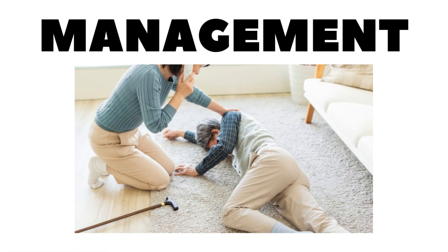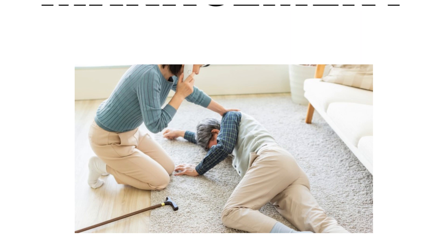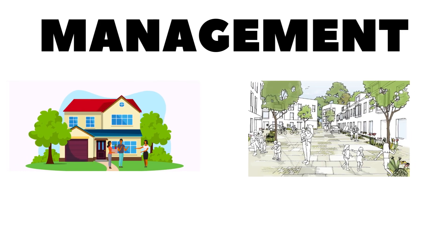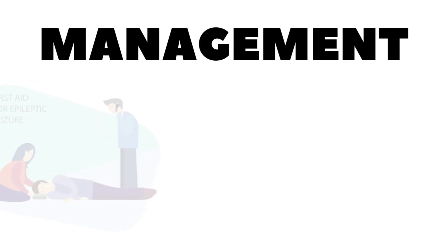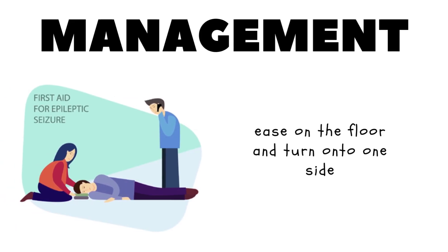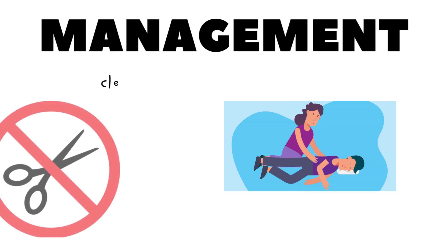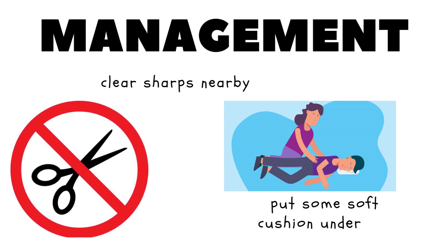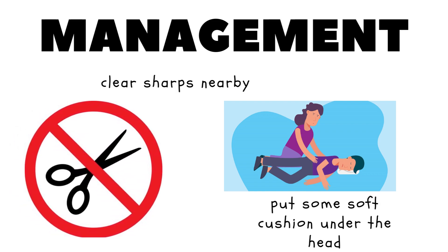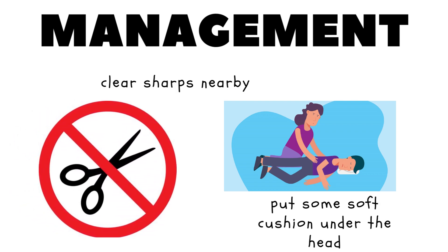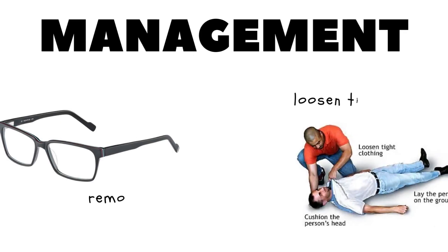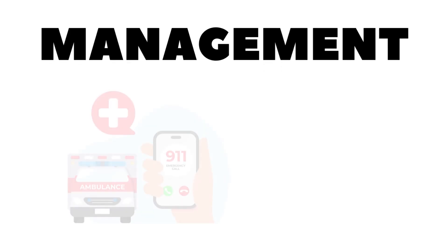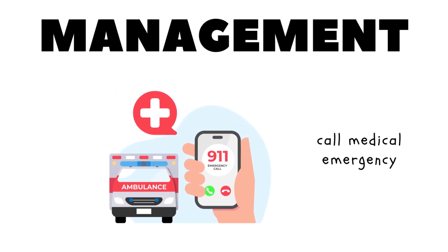For management of seizures at home or in public, ease the person to the floor and turn them gently to one side to help them breathe. Clear the area of anything hard or sharp to prevent injury. Place something soft and flat, like a folded jacket, under their head. Remove eyeglasses and loosen ties or anything around the neck that makes breathing difficult. Then call for medical emergency immediately.